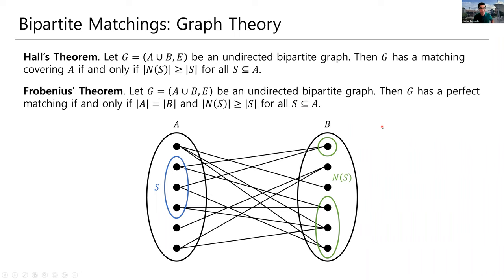There's a special case of Hall's theorem called Frobenius' theorem. Frobenius' theorem extends this to specifically perfect matchings. So, we'll read the theorem first. If G is an undirected bipartite graph, then G has a perfect matching if and only if the number of nodes in A is equal to the number of nodes in B, and, once again, we have this condition from Hall's theorem. So, to unpack this, we need a little bit of background.